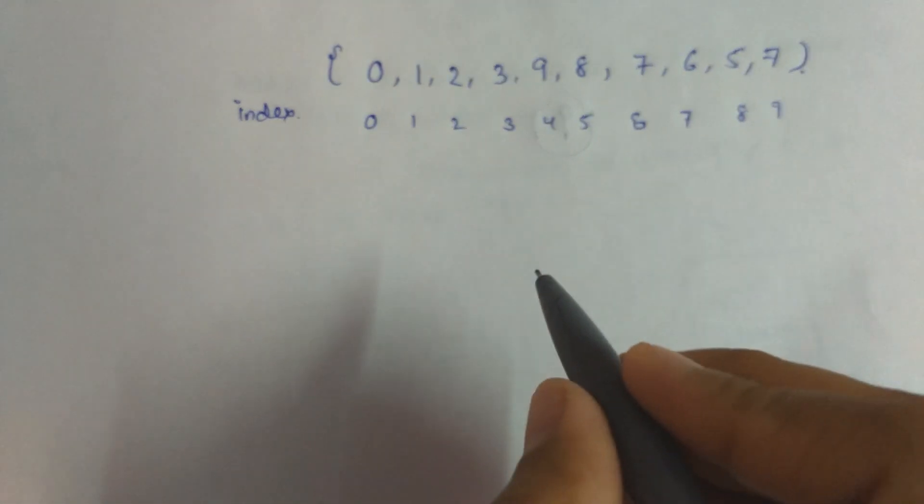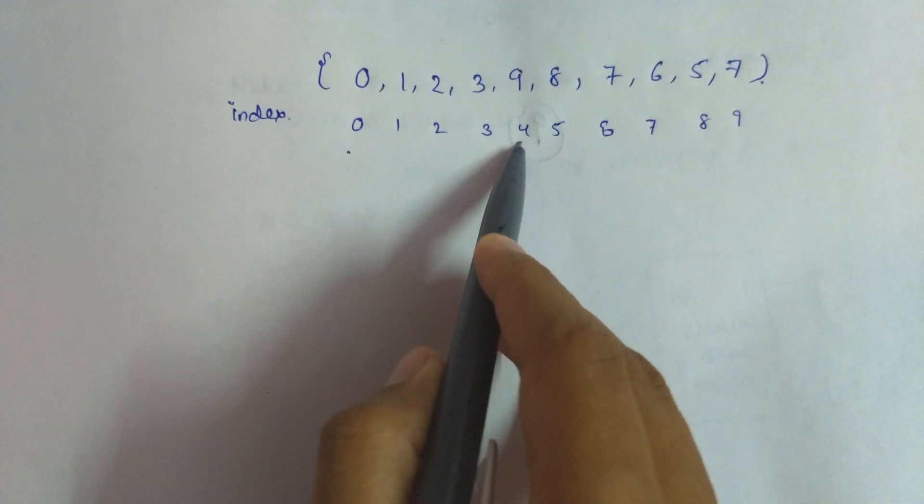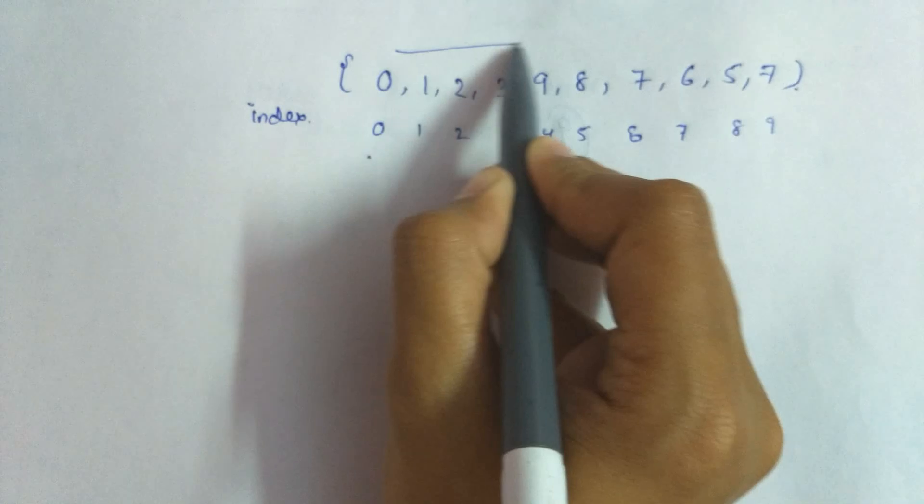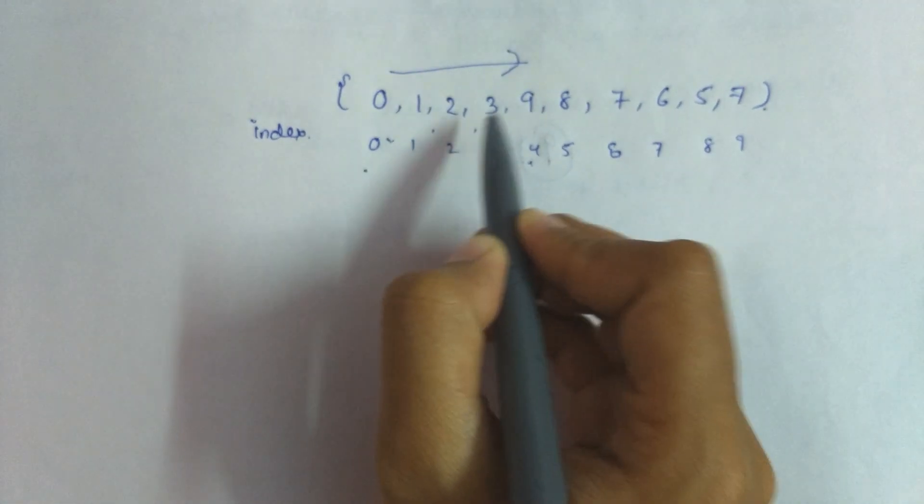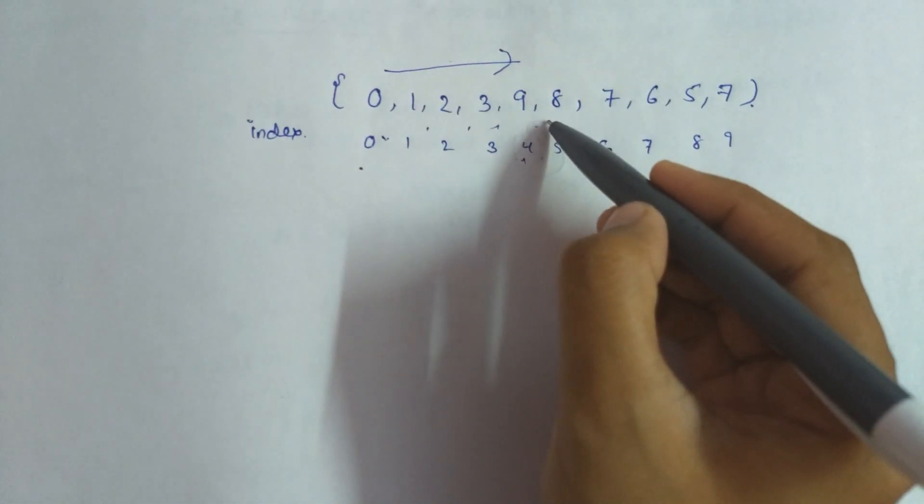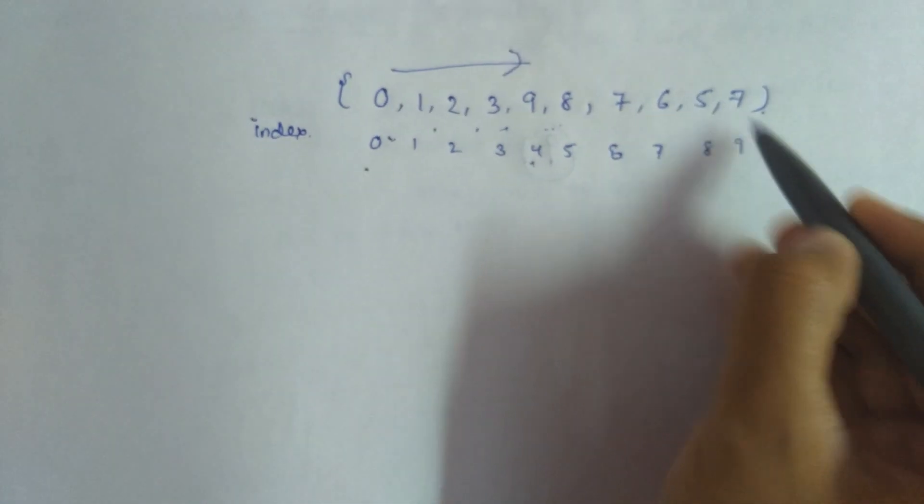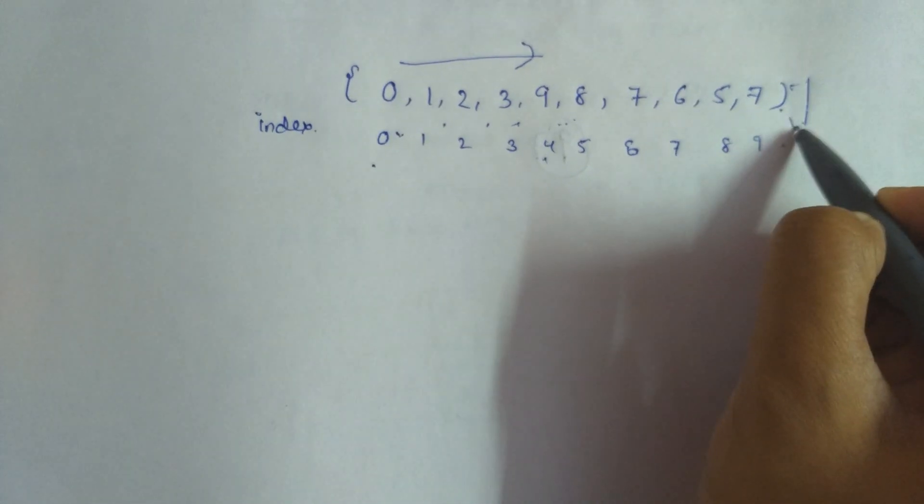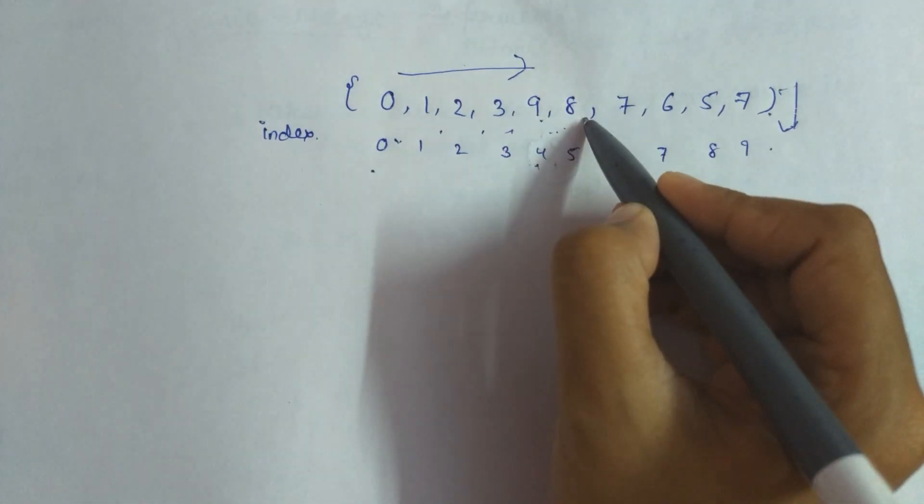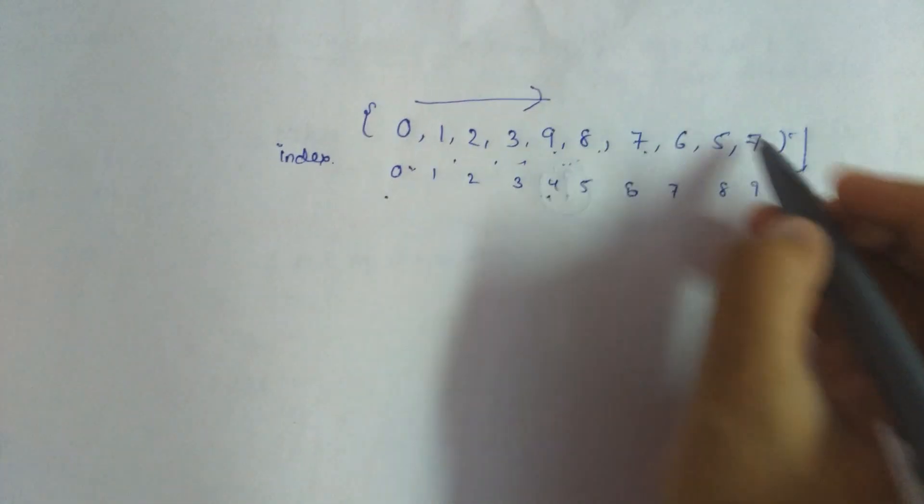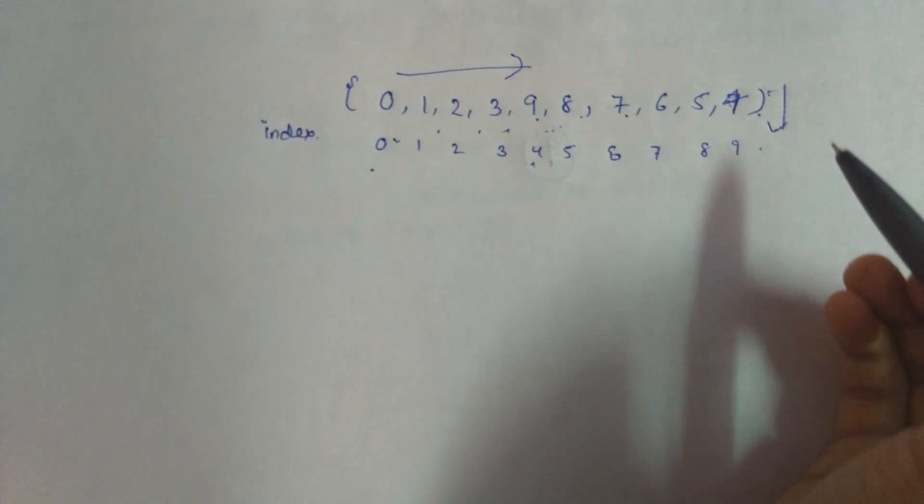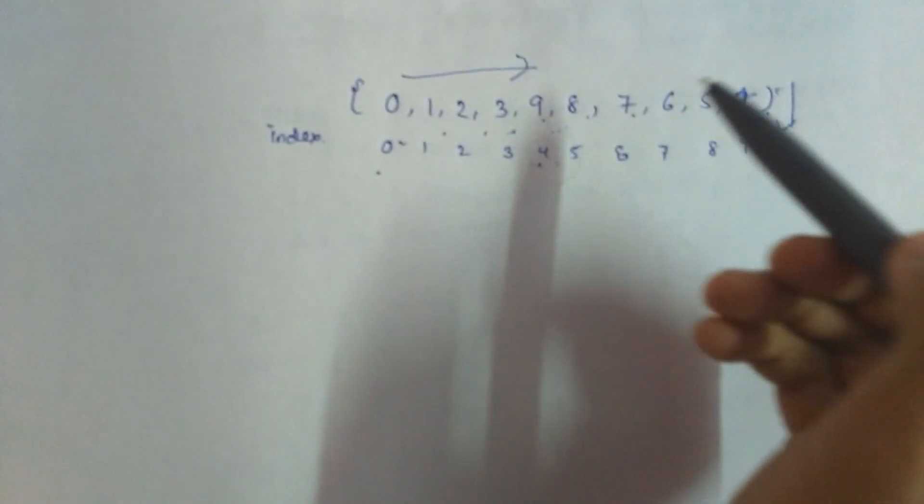Over here from 0 to 4 index value it is monotonically increasing: 0, 1, 2, 3, increasing to 9. And from 4 to 9 it is decreasing. You can see that from 9 it comes 8, then 7, 6, 5, and 4. So yes, it is decreasing. This is what the first property of the bitonic sequence says.